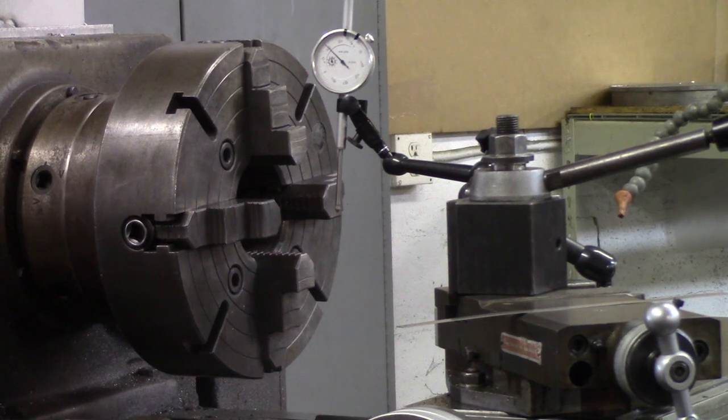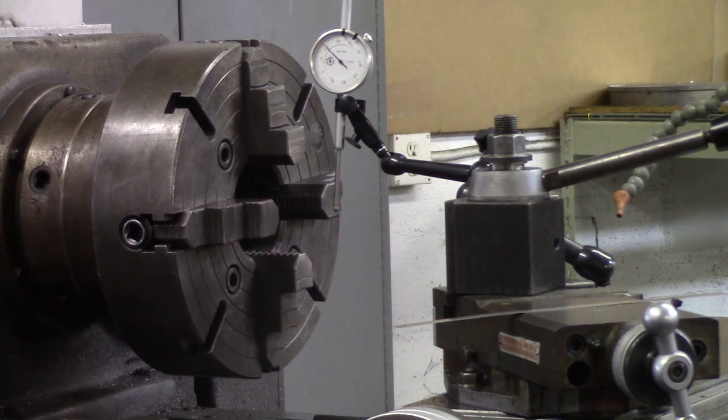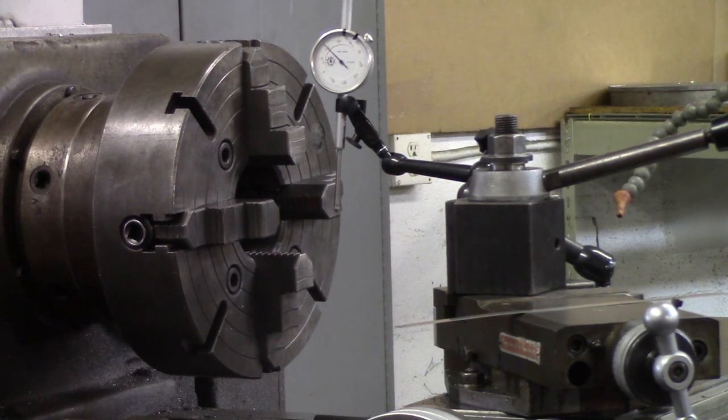That helps a lot so you don't just want to move the jaws and expect them to be around the same spot. That's what the circles on the front of the chuck are for.